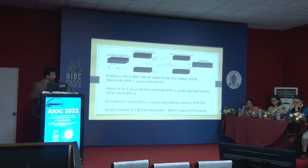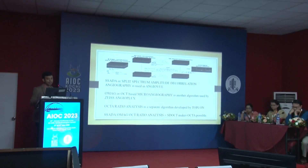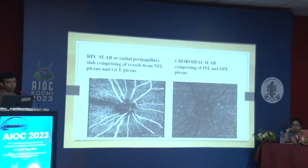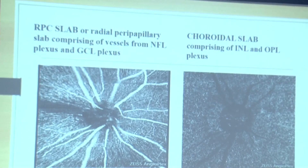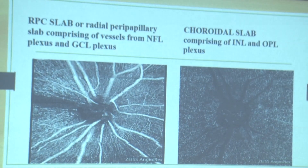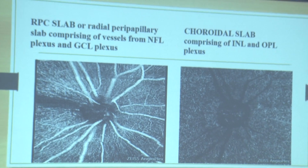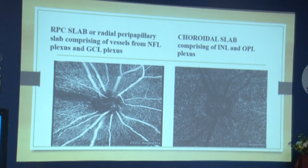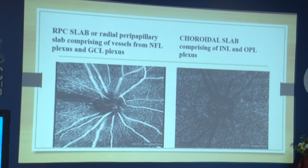There are mainly two slabs in OCTA: the RPC slab, or superficial slab, and the choroidal slab, or deeper slab. For glaucoma analysis, we are more focused on the superficial slab.